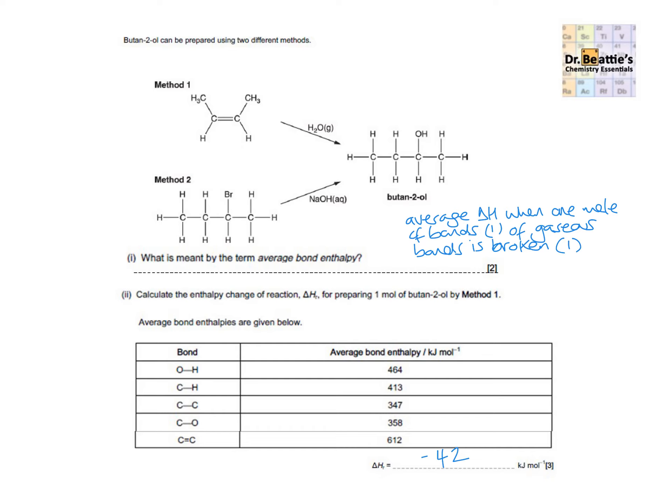So if we look at this, it's asking us to work out the enthalpy change of reaction, ΔH, of one mole of butan-2-ol by method one. So we're looking at this method here. So we know our reactant is this alkene. And so we're going to quickly just work out what bonds we've got in there. You'll notice that the CH₃s are not a complete displayed formula. So it'd be useful here to take the CH₃s on our alkene and just draw them outright. And so this makes it easier to see where our CHs are in the alkene reactant.